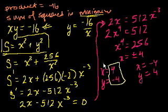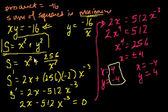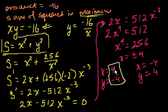We are actually not done yet — we need to confirm this is truly a minimum, not just any critical point. Let's prove we're at a minimum by taking the second derivative and evaluating it at x equals 4, then checking whether the function is concave upwards or concave downwards.